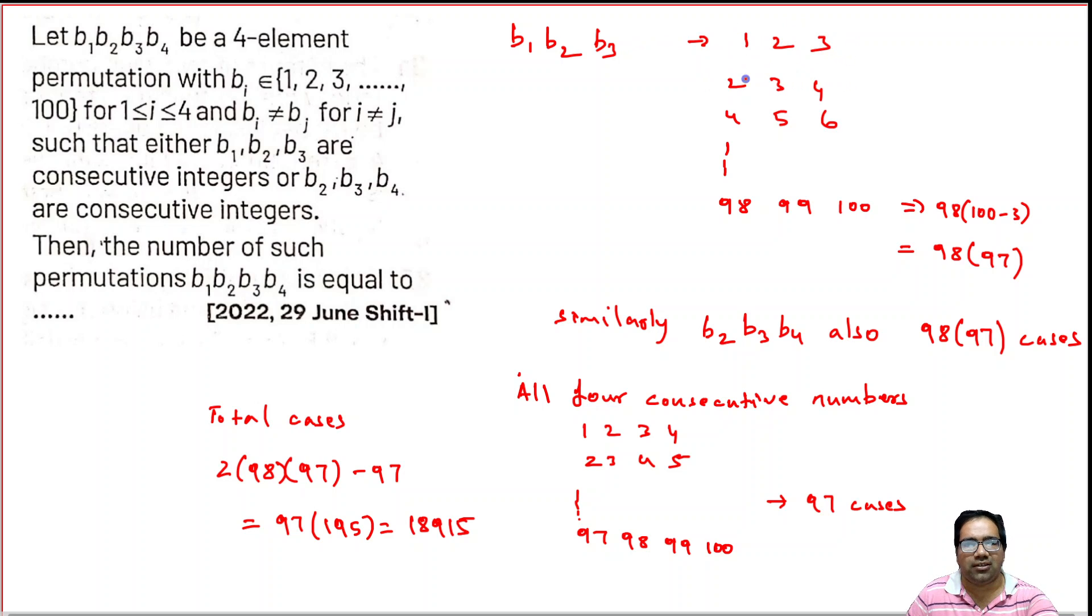B4 we can pick any of the numbers which is not 1, 2, 3, any of the numbers which is not 2, 3, 4. That means B4 we can pick one among 100 minus 3. For example, for B4 we have 97 options. So three numbers we are using here, total we have 100 numbers. So that is why remaining 97 we can use, any of the remaining 97 numbers.